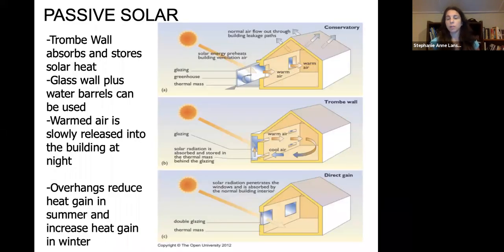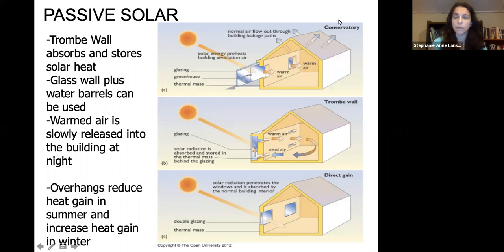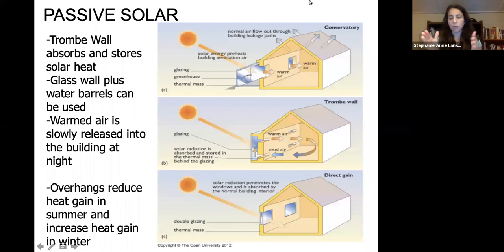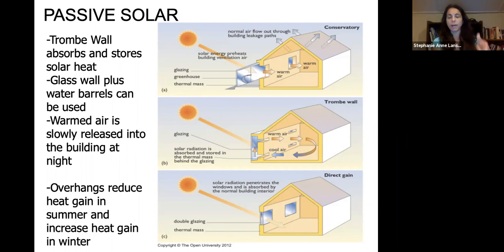Before looking at active solar collection, we can look at passive solar. One approach is a conservatory, which preheats air through a greenhouse effect, creates a thermal mass, and allows warm air to flow into the house. A Trombe wall is similar but uses a double flow — warm air comes in one way and cool air returns to be heated again.